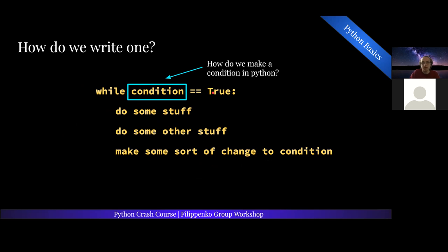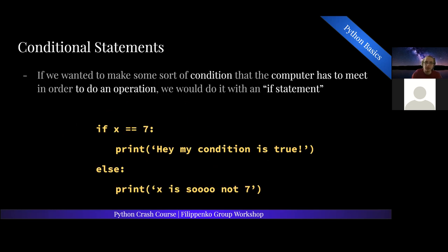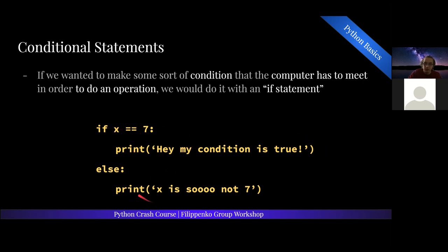So how do we make a condition in Python? Conditional statements is how we make a condition. If we want some condition that the computer has to meet in order to do an operation, we use an if statement. If x is equal to seven, do something. Otherwise — that's what we denote by else — print 'x is not equal to seven.' Notice we're not using one single equals sign; that's how you declare a variable. Two equals signs is comparing two things together.